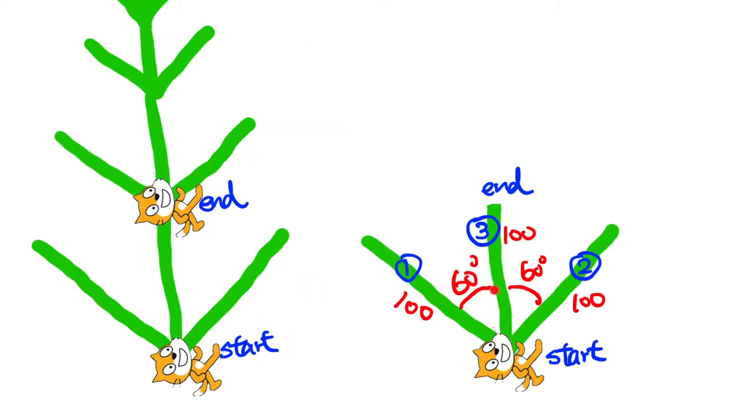First of all, we turn the cat in anti-clockwise direction by this angle, 60 degrees. So this is our first step. And then we move the cat along this direction by 100 steps.